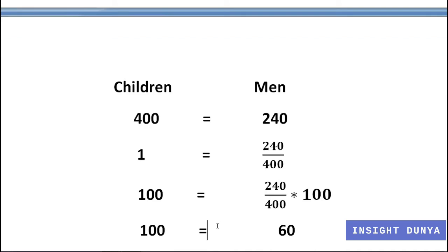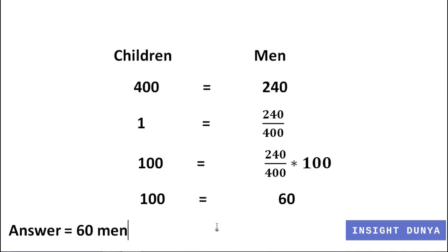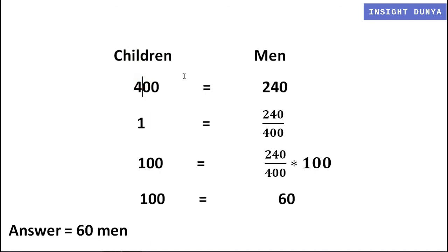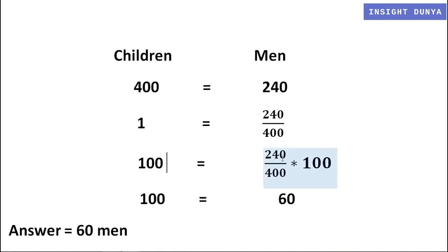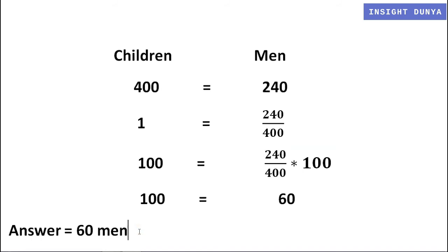We have to find how many men can be served with food enough for 100 children. Since 400 children equals 240 men, dividing both sides by 400 gives one child equals 240 over 400 men. Multiplying both sides by 100 gives 100 children equals 240 over 400 multiplied by 100 men, which equals 60 men. So the remaining food is enough for 60 men.